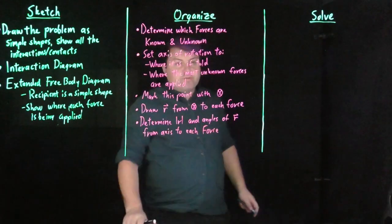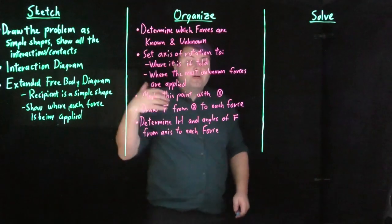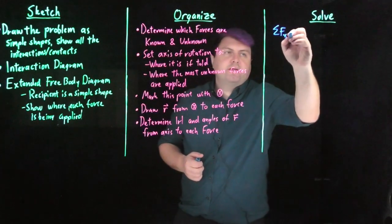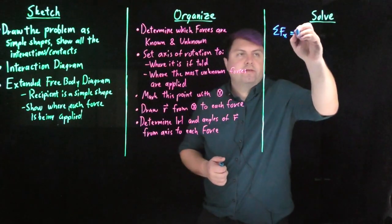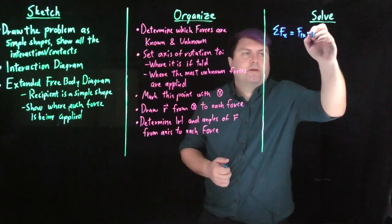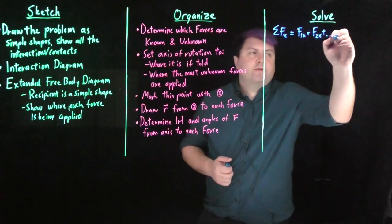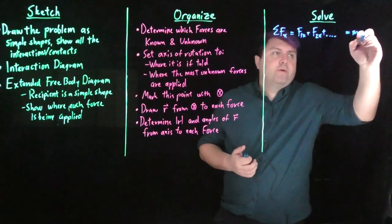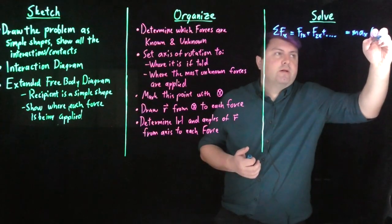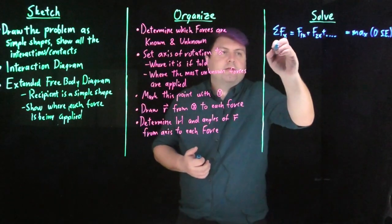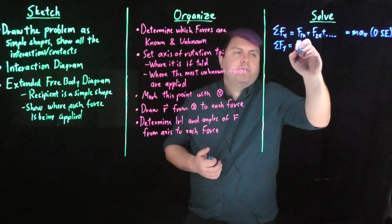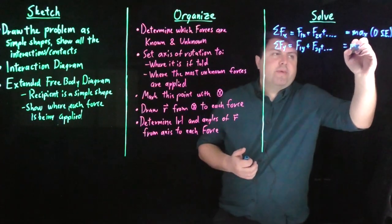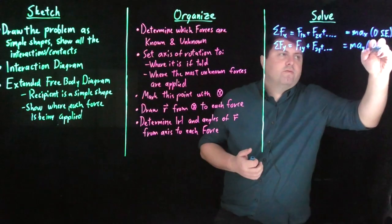Once we have that, then as we solve, we're going to have something very similar to what we had in Newton's second law. We still have the sum of our forces in the X, and that's going to be F1X plus F2X, so on and so forth. If we're in static equilibrium, this is going to be zero, but we can say MAX, so zero for static equilibrium. The sum of our forces in the Y is going to be F1Y plus F2Y, and that's going to be the mass times acceleration in the Y, and zero for static equilibrium.